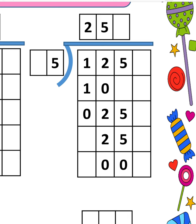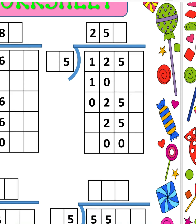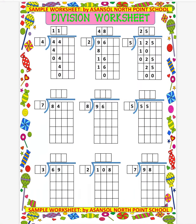One more example — 125 divided by 5. It is already done, same method. There are 6 more problems that you have to solve by yourself. I hope students the basic part of division is clear now. That is all for today's video class. Thank you.